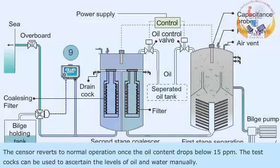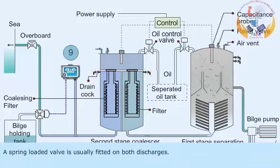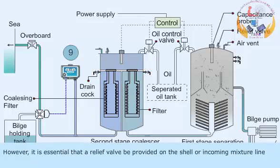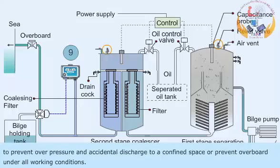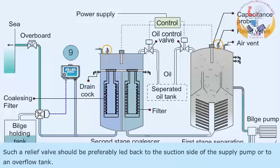The test coax can be used to ascertain the levels of oil and water manually. A spring-loaded valve is usually fitted on both discharges. However, it is essential that a relief valve be provided on the shell or incoming mixture line to prevent overpressure and accidental discharge to a confined space, or to prevent overboard discharge under all working conditions. Such a relief valve should preferably be led back to the suction side of the supply pump or to an overflow tank.